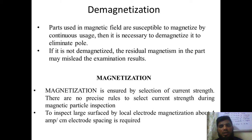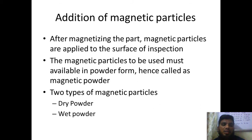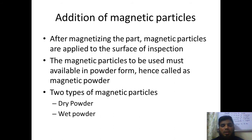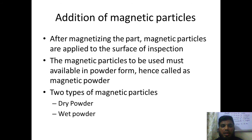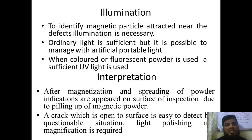Generally for local electrode magnetization, we use 4 amperes per centimeter electrode. Next is addition of magnetic particles. After magnetization is completed, we apply the magnetic particles so that we can see the behavior of the magnetic particles. This process is generally used for surface level inspection, and we can go for a little bit below the surface level. Especially for liquid penetrant, we can only go for extreme surfaces, whereas in magnetic particle inspection we can reach slightly sub-surfaces. We generally use two types of magnetic particles: dry powder and wet powder.